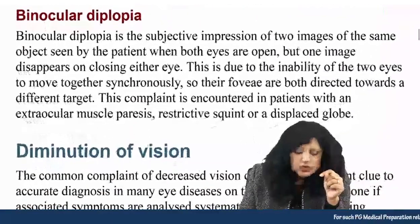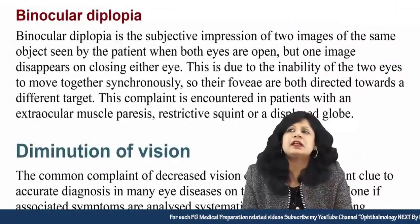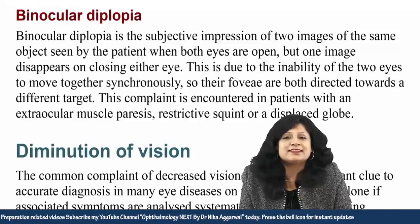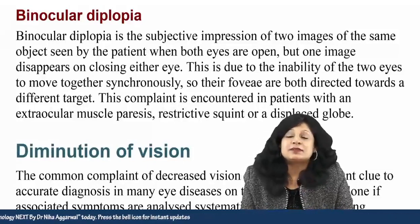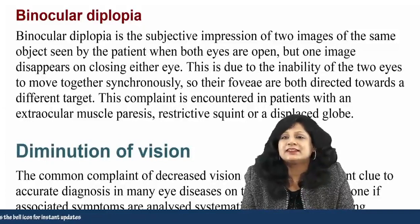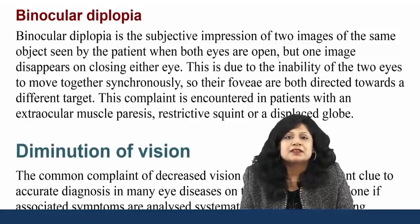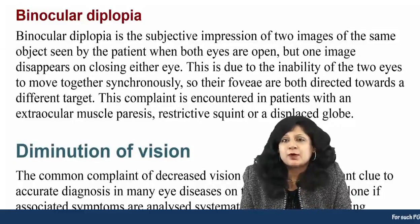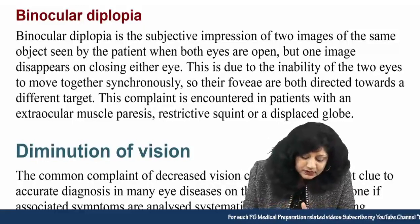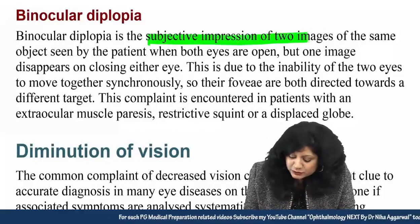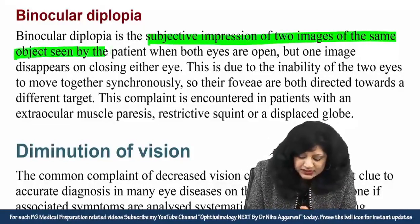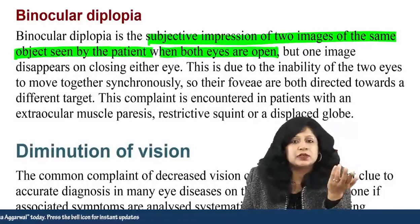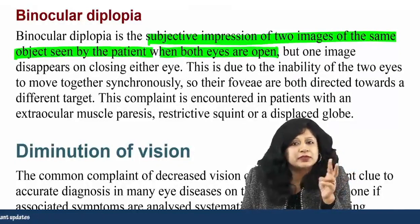Now we talk about binocular diplopia. Diplopia is a relatively simpler symptom in the sense that once a patient has it, life becomes difficult for them, but as an ophthalmologist, if you get the complaint of diplopia, life becomes simpler to evaluate. It is a subjective impression of two images of the same object seen by the patient when both eyes are open, and if the person closes one eye, they get only one image.